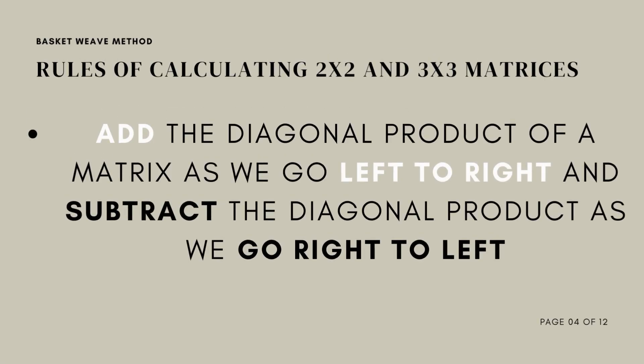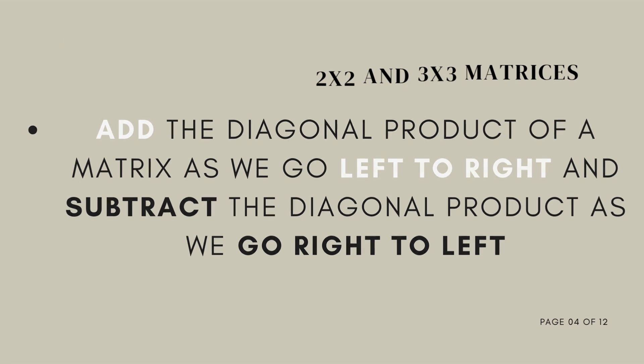Let's move on to the rules of calculating 2x2 and 3x3 matrices using basket weave method. The basket weave method is for 2x2 and 3x3 matrices only. Here, we add the diagonal product of a square matrix as we go left to right and subtract the diagonal product as we go right to left. The resulting value will be the value of our determinant.